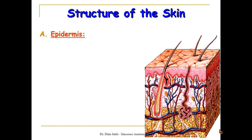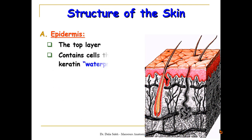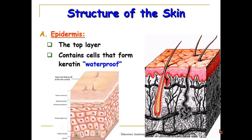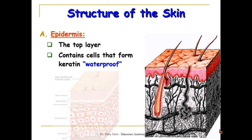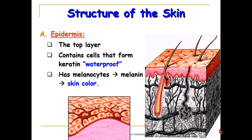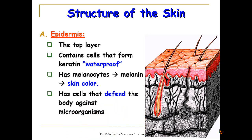We have a layer called the epidermis. It is the top layer of the skin. It contains keratinocytes that form keratin, which acts as a waterproof. It also has melanocytes which produce melanin that gives the skin its color. It also has cells that defend the body against microorganisms — we call them Langerhans cells.